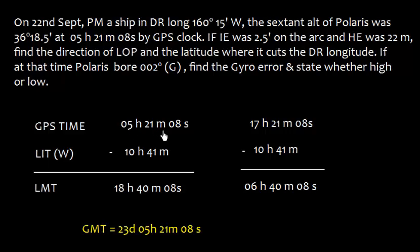Let's start with GPS time, which is 05 hours 21 minutes and 08 seconds. We can assume this is chronometer time, but there could be some ambiguity. The given time could be 05 hours or it could be 17 hours in 24-hour format.